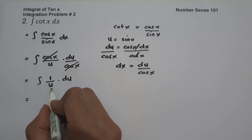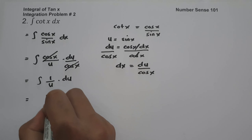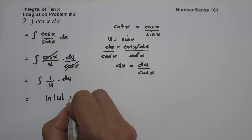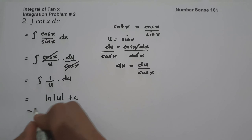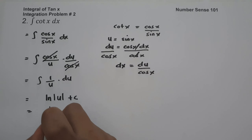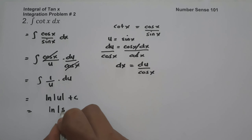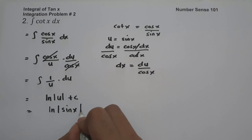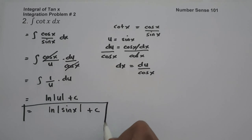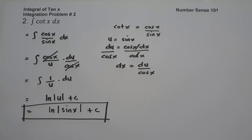The antiderivative of 1 over u is ln absolute value of u plus C. And now we substitute the value of u, which is sine x. So this will be ln absolute value of sine x plus C. Since we don't have a negative sign in our answer, this will be our final answer. I hope you've learned from this video. Thank you so much for watching and God bless us all.